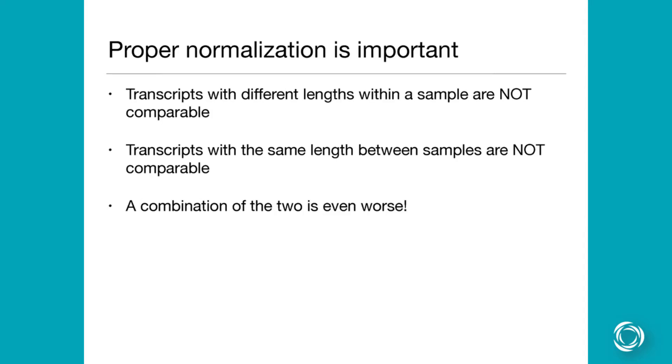Okay, so on that note, the first thing is that proper normalization is very important and transcripts with different length within the same sample are not comparable. And we'll talk about that in a second. And the reason for that is basically this length bias that's inherent in the protocol of RNA-seq.